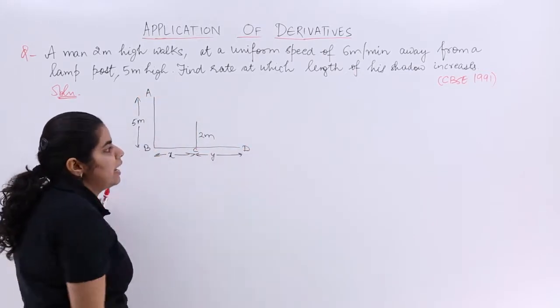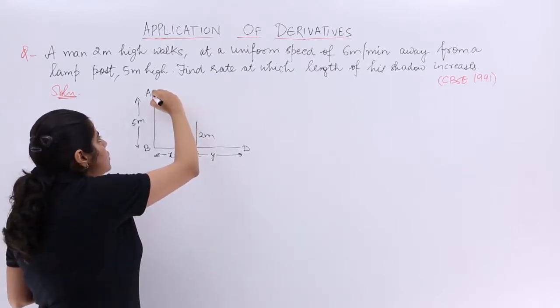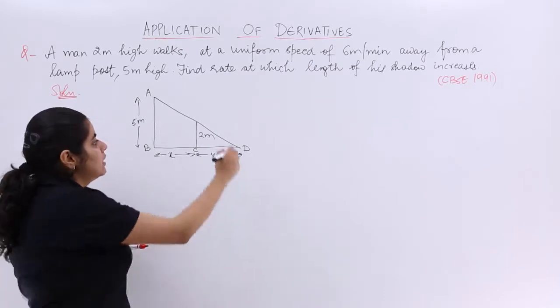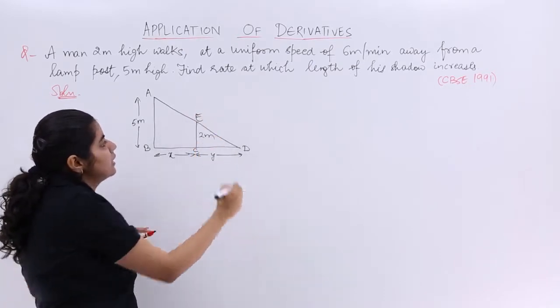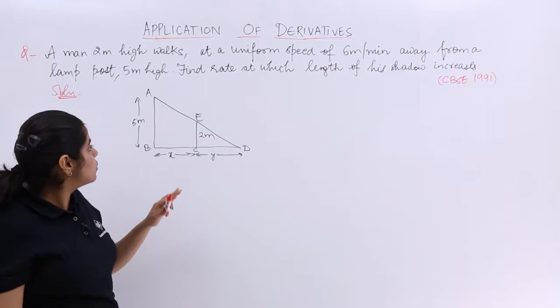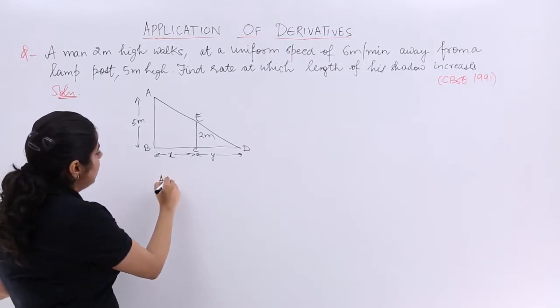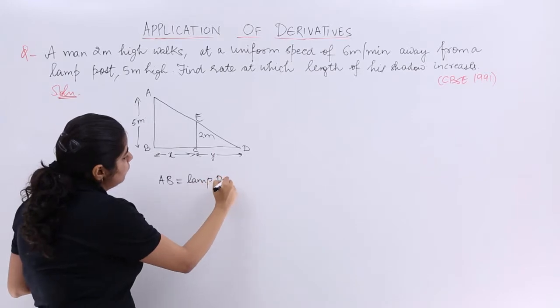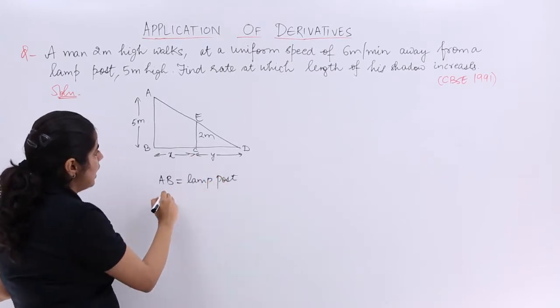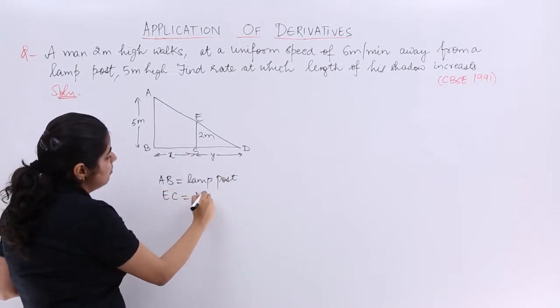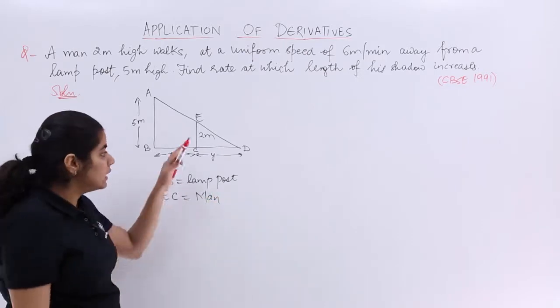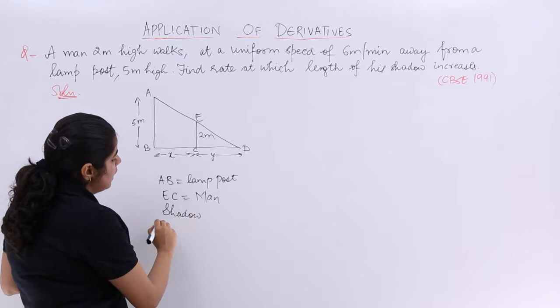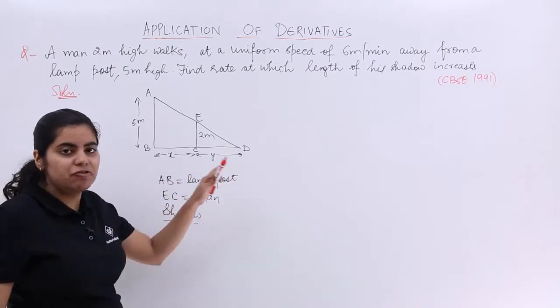A, B, C, D. I have been naming them and let's join this. So basically we have 2 triangles and these 2 triangles are similar triangles that we have been studying. So directly I can say that if my AB is the lamp post, if my EC is the man that we are talking about, then his shadow is being represented as x and y.